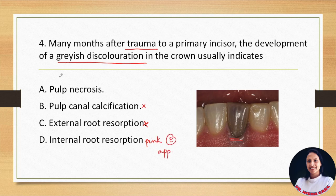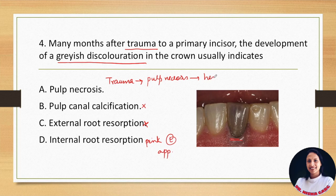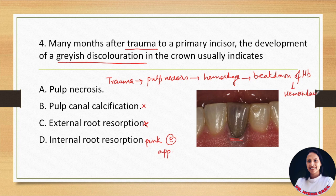There is a history of trauma. After trauma, pulp necrosis occurs in which hemorrhage invades the dentinal tubules, followed by breakdown of hemoglobin. Since it's a non-vital tooth, there is no possibility of absorption of hemosiderin deposits, and this gives the grayish discoloration to the tooth. So among these choices, pulp necrosis is the answer.